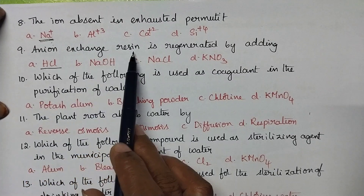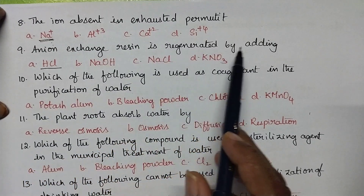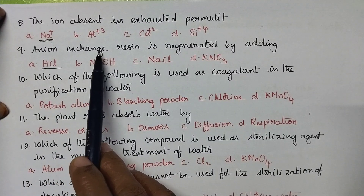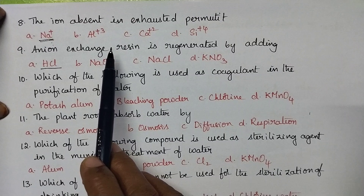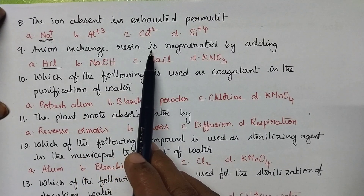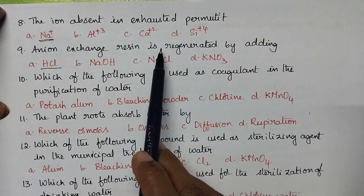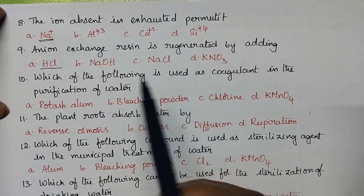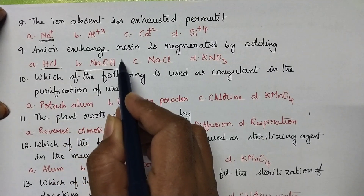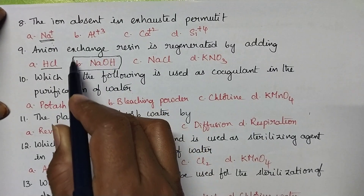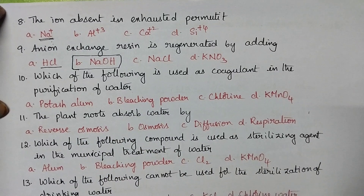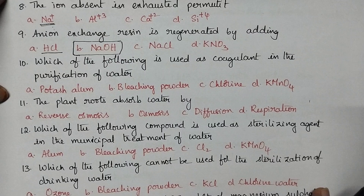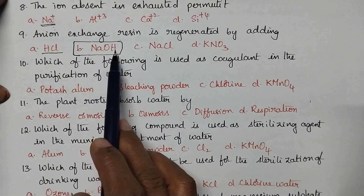Anion exchange resin is regenerated by adding sodium hydroxide. Anion exchange resin is capable of exchanging its OH⁻ ions with anions present in the hard water. When it is exhausted, it can be regenerated by adding sodium hydroxide.